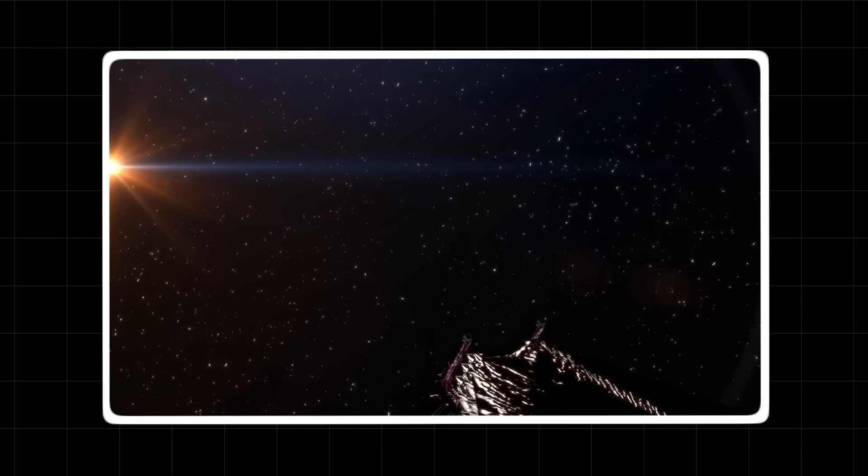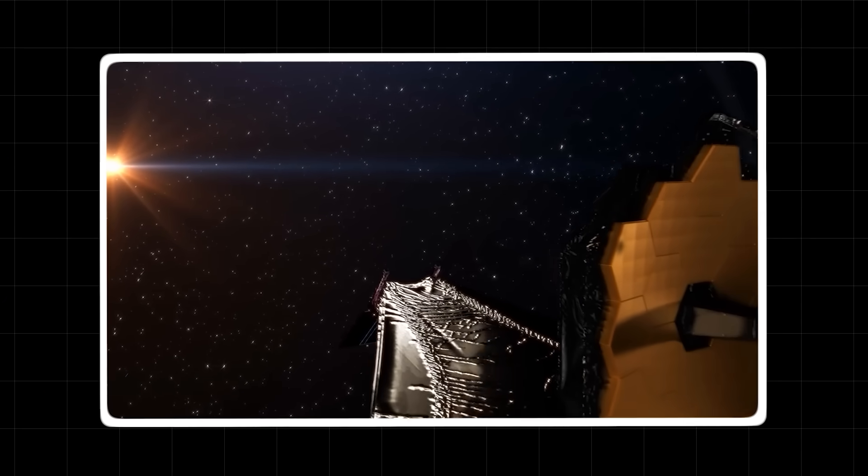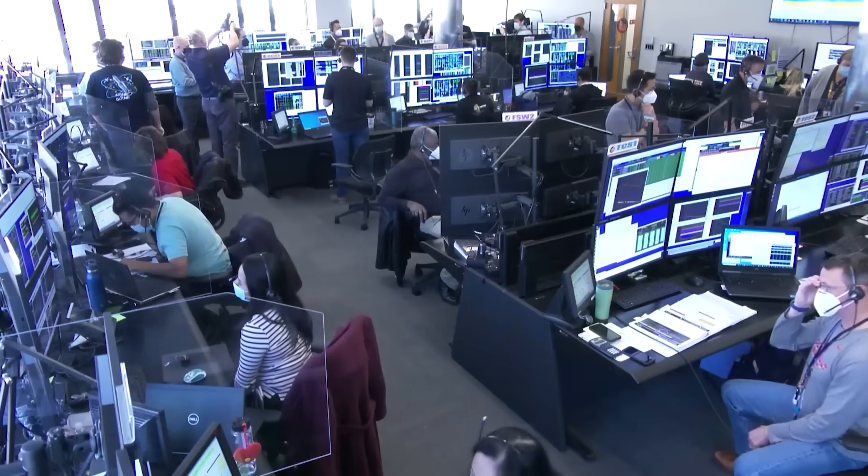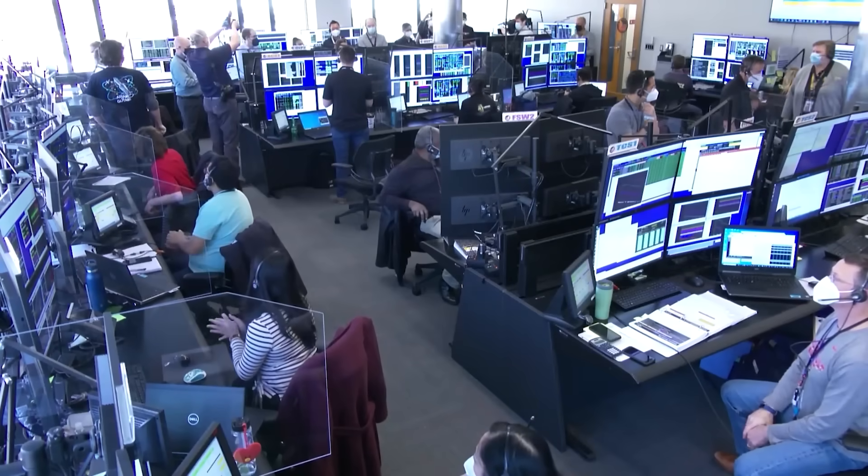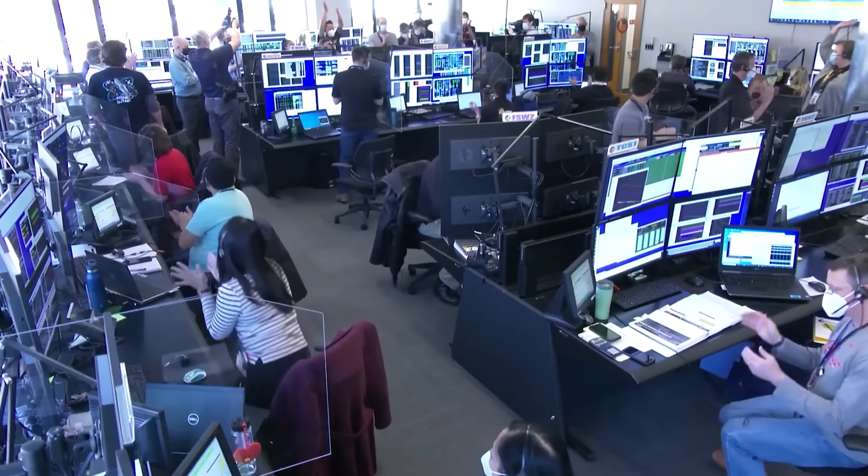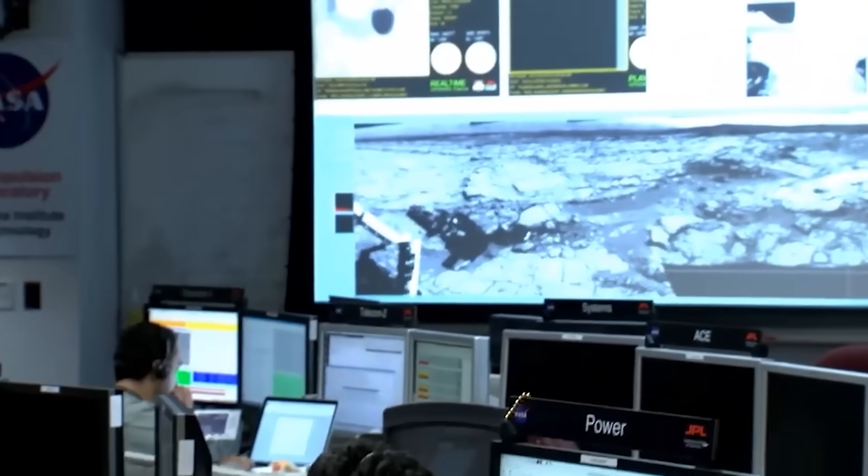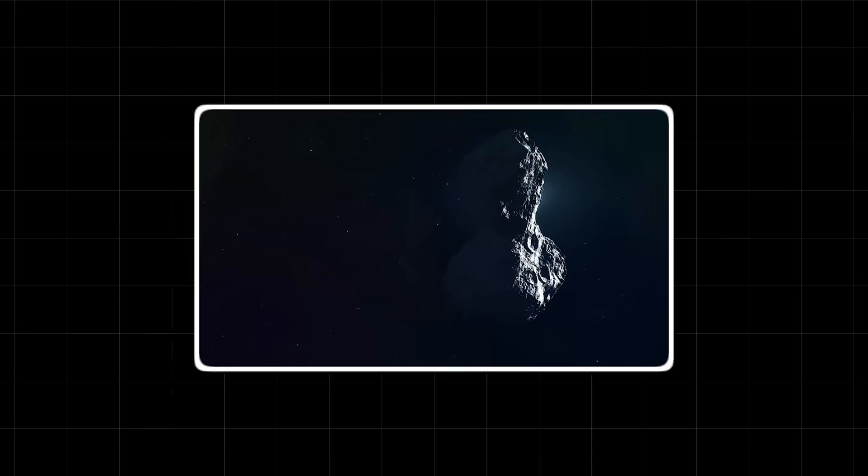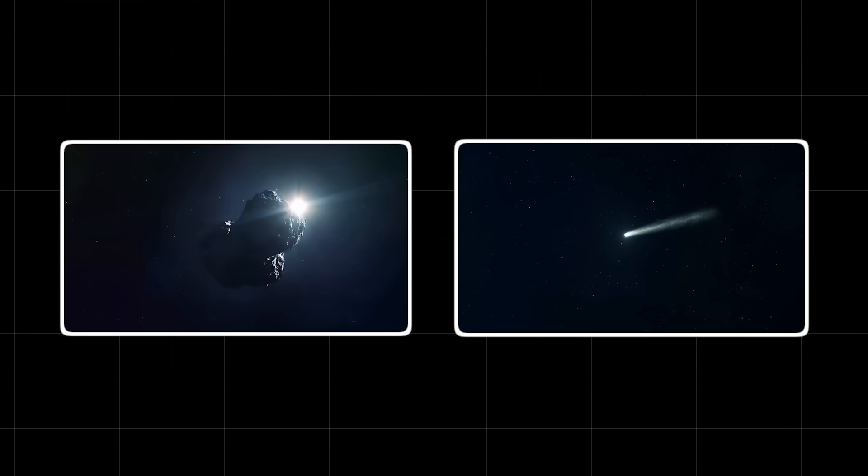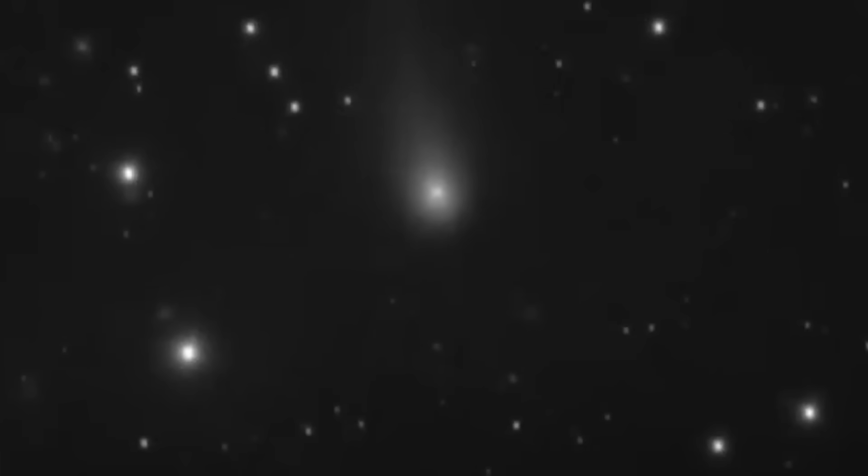The James Webb Space Telescope, the most powerful telescope ever built, is now being used to study 3i Atlas in unprecedented detail. Scientists are hoping to get a better look at its composition, to see if it is made of the same materials as the asteroids and comets in our own solar system. If it is not, then it would be a strong indication that it is indeed a visitor from another star. And if that is the case, then the question of its purpose becomes all the more urgent.